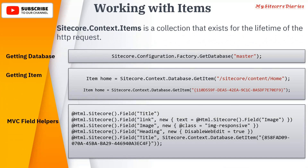MVC field helpers are basically Sitecore controls which help you render the Sitecore field directly. For example, Html.Sitecore().Field("title") will convert that into the appropriate HTML structure at runtime. You can render fields like title, link, heading, and also pass parameters using the MVC helper extension. These are the basic codes you might require — I'm giving the concept rather than going into full coding details.